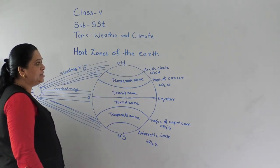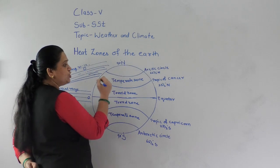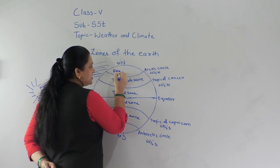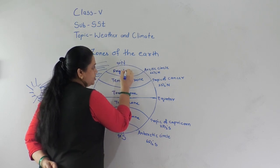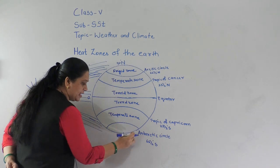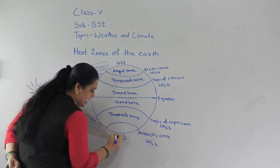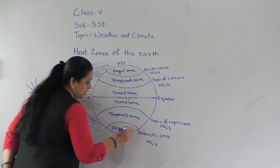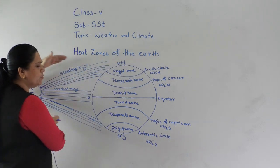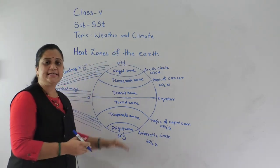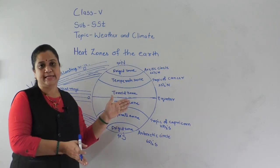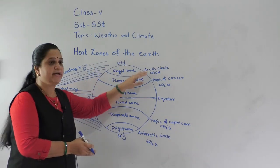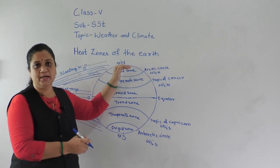The third zone is the Frigid Zone, which lies between the Arctic Circle and the North Pole. Similarly, the area between the Antarctic Circle and the South Pole is also a Frigid Zone. The sun rays fall very slantingly here, so this region receives very little sunlight and remains cool throughout the year.